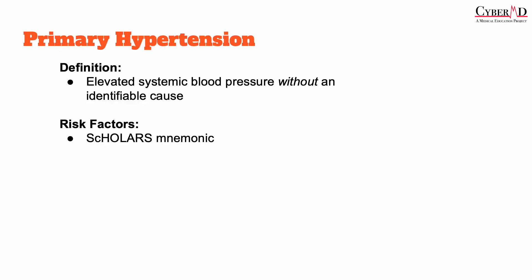Primary hypertension, also known as essential hypertension, refers to hypertension with no known underlying cause. It accounts for around 90 to 95% of all hypertension cases. Although the exact cause of primary hypertension is unknown, several risk factors have been identified, for which you can use the SCHOLARS mnemonic to remember.